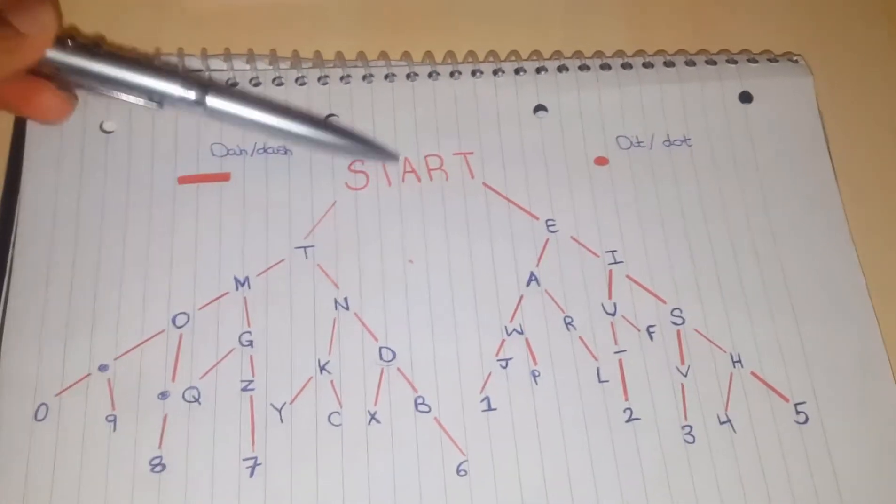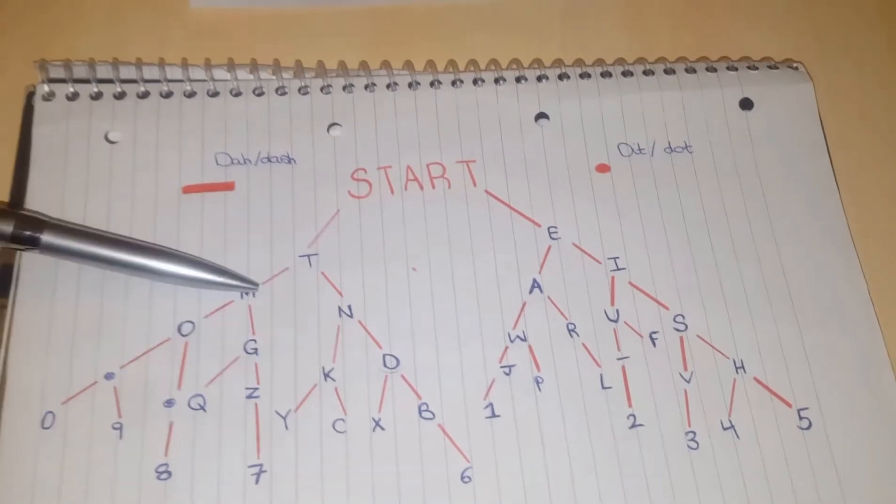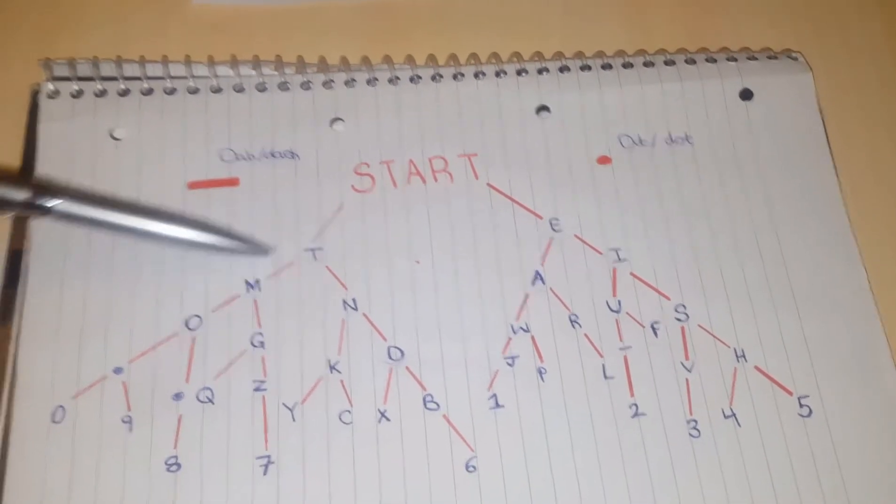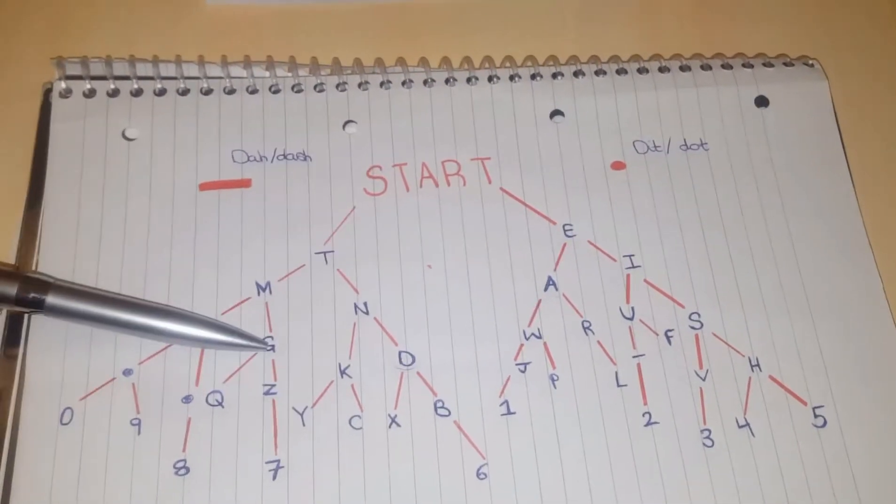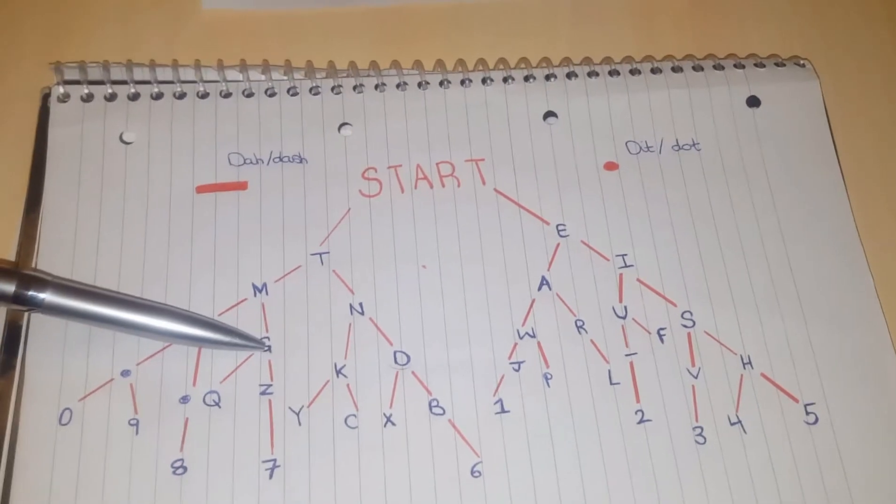For Q, you go dash dash, and you go to a dot, because you've changed direction. So, dash dash dot, and you change direction again, dash.